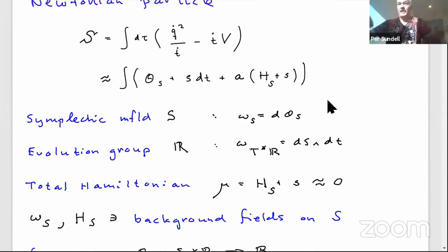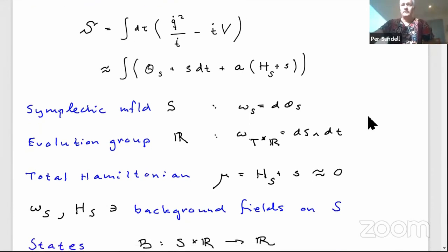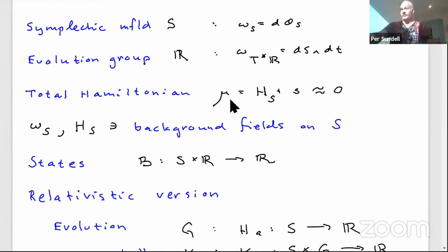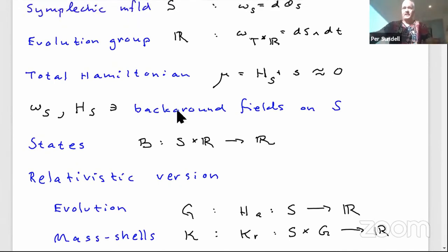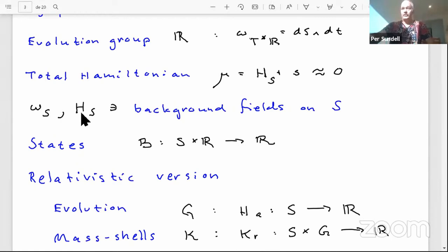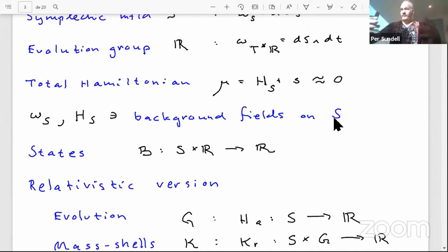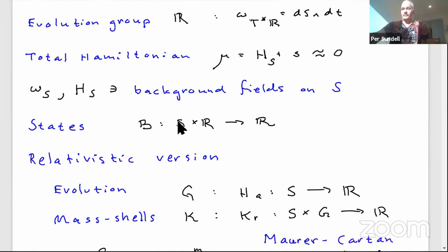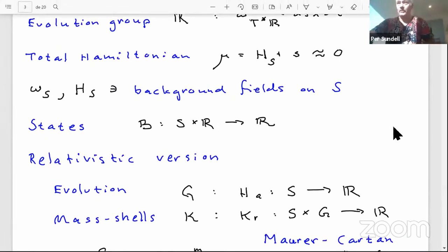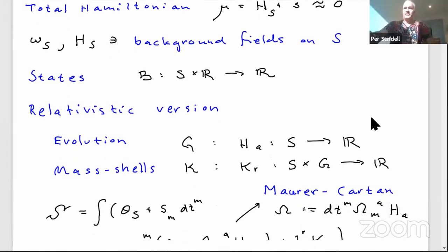For example, this could be the hydrogen atom. The total Hamiltonian mu is sometimes referred to as movement functions. If we think broadly, omega — the symplectic form — and the Hamiltonian H are background fields on S, fixed on the symplectic geometry. The states, on the other hand, are functions from the symplectic manifold cross time to R, where we observe them — not normalized in this talk. This is the setup; now for the relativistic version.